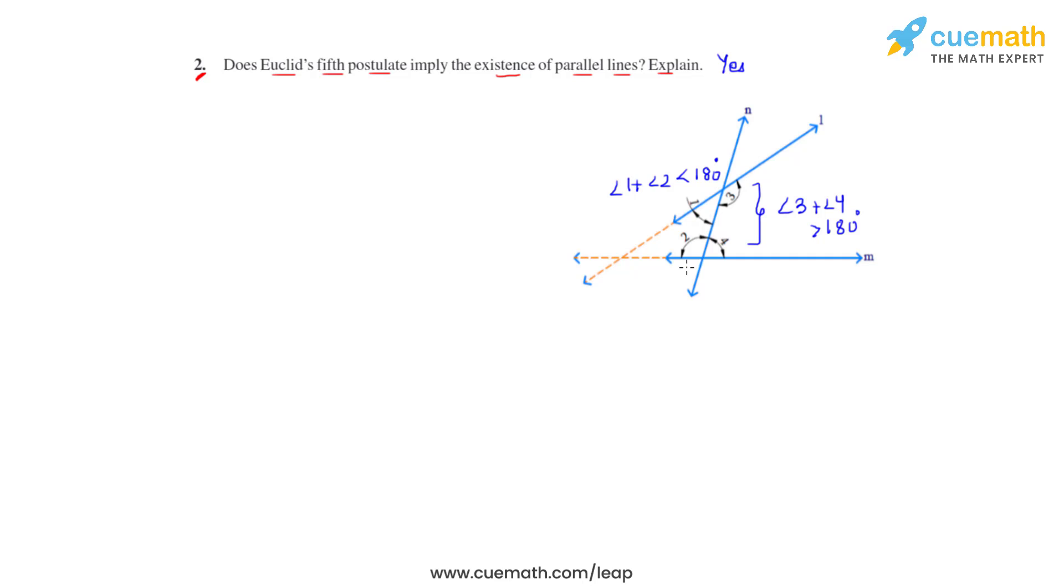Now, how does this imply the existence of parallel lines? We can have another figure with two lines, line a and line b, which are intersected by a third line, line c. This is a different case where we can see the co-interior angles formed on either side of line c: angle 4 and angle 3, angle 2 and angle 1.